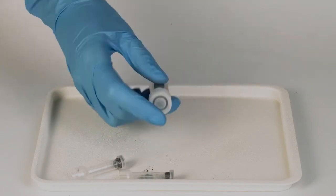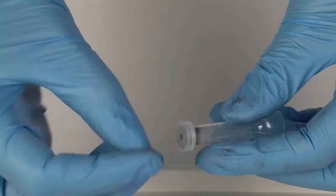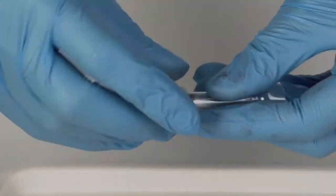Insert the graphite leads, using the sharp ends, into the openings of the caps. Put both tubes aside.